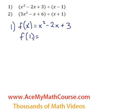Okay, so we can just replace x for 1, so here we have 1 squared which is 1, minus 2 times 1, just minus 2, plus 3.